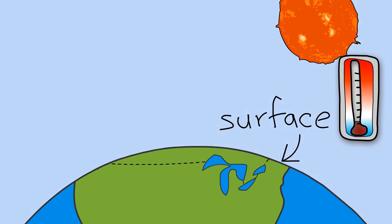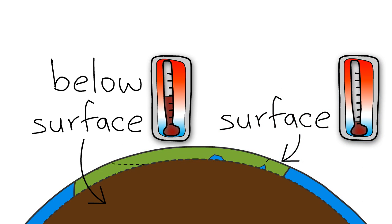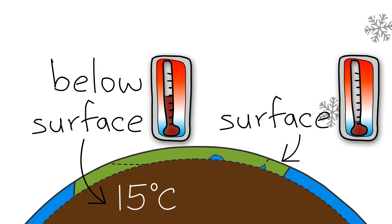While the temperature of the surface of the Earth changes with the seasons, the temperature of the ground below the surface does not. Even at just 2 meters or 6 feet under the ground, it is about 15 degrees Celsius or 60 degrees Fahrenheit all year round.